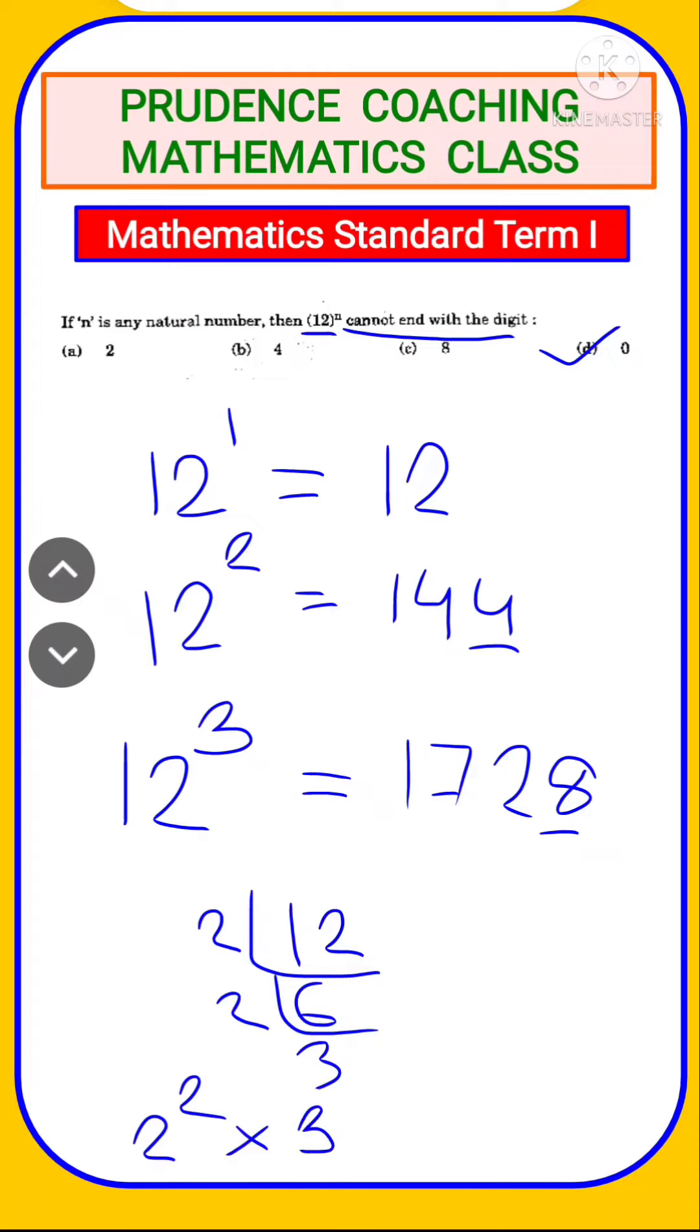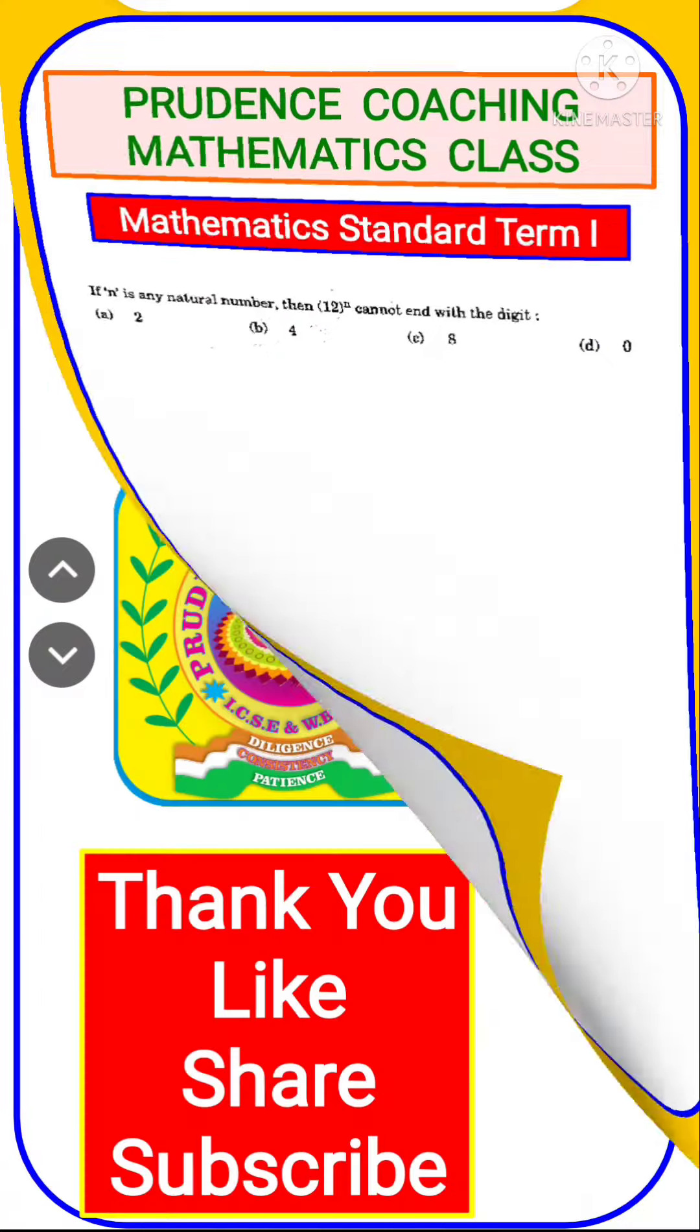You must remember that to get a unit digit 0 in the prime factorization we must have at least a 2 and at least a 5. But here we have only 2, we don't have 5. That means 0 will never come at the end of 12 to the power n. So this is also a method of solving.